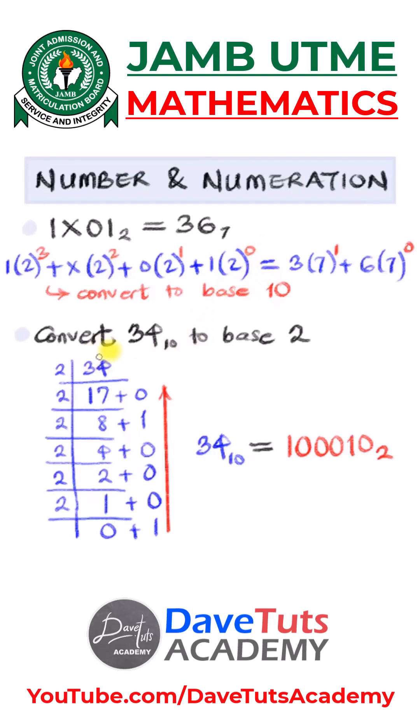But if you want to convert from base 10 to base 2, you need to divide by that base that you want to convert to. Like here, 34 in base 10, if you want to convert to base 2, you need to divide by 2 which is the base. But then what you write out is the remainders. You can see these are the remainders and you take it from bottom, you take it up. That is part of number base.